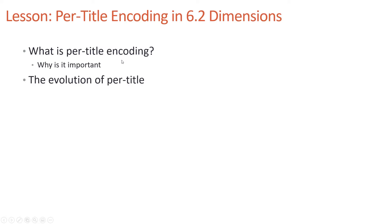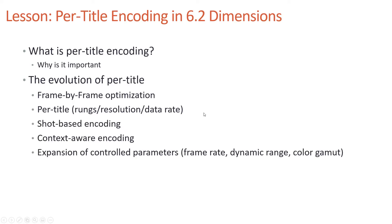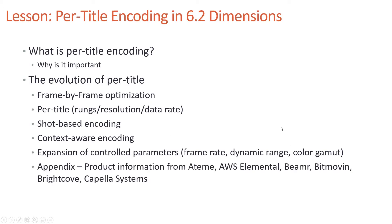Then we'll look at the evolution of per-title encoding, which started as frame-by-frame optimization, transitioned to per-title where the rungs, resolution, and data rate were adjusted, went to shot-based encoding, context-aware encoding, and then expanded the control parameters from rungs, resolution, and data rate to frame rate, dynamic range, and color gamut.